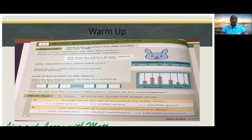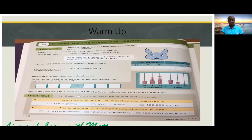What is the greatest five-digit number you can write? Please write your number — think of the greatest five-digit number you can write. So the greatest five-digit number we can write is ninety-nine thousand, nine hundred and ninety-nine.